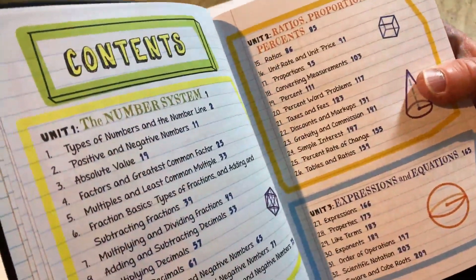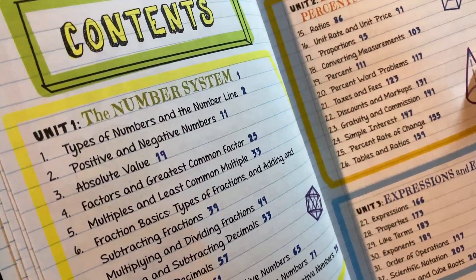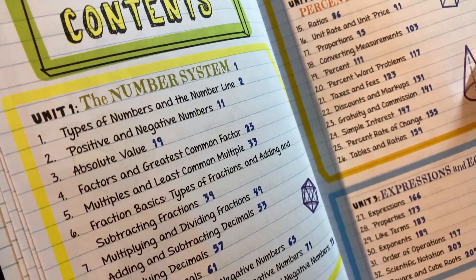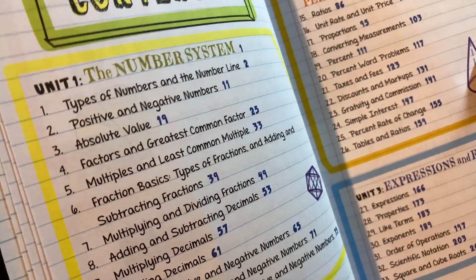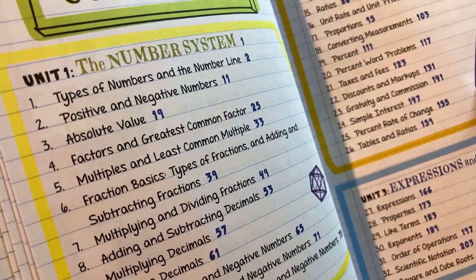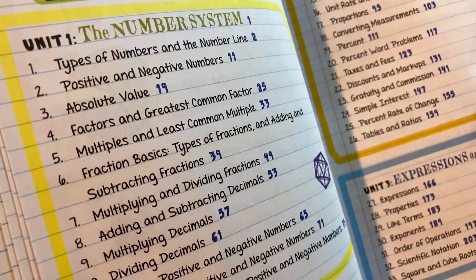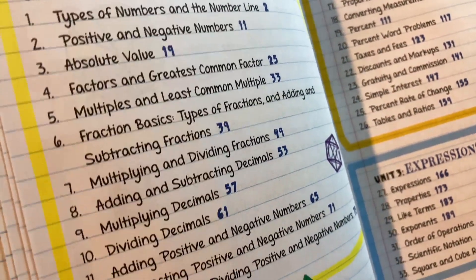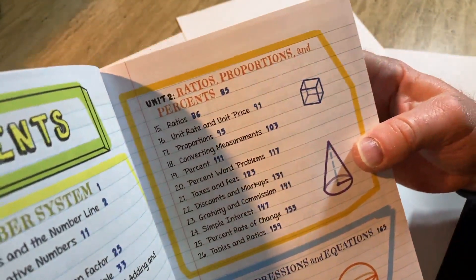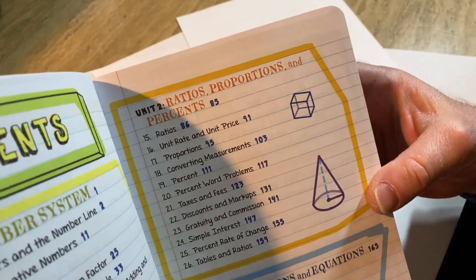So it starts with numbers, the number system, types of numbers and the number line, positive and negative numbers, absolute value, factors and greatest common factor, multiples and least common multiples, so really basic stuff. Then ratios, proportions, and percents.